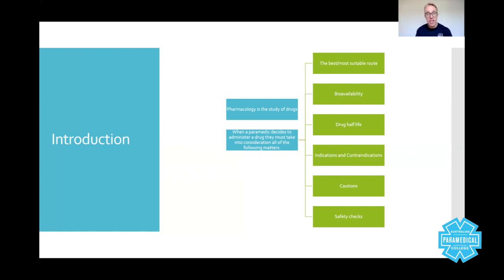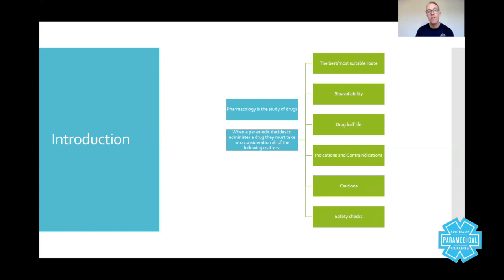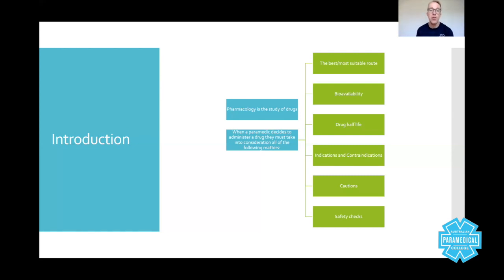Indications are when you would give a drug — for example, an indication for treating asthma is salbutamol, and indications for adrenaline include life-threatening asthma and anaphylaxis. A contraindication means situations when you absolutely would not give a drug. Caution is something you also need to be mindful of — just because something isn't a contraindication doesn't mean you can ignore it. If a caution says be careful around pregnant women, you have to do your homework and be able to stand up in a court of law and justify your steps.